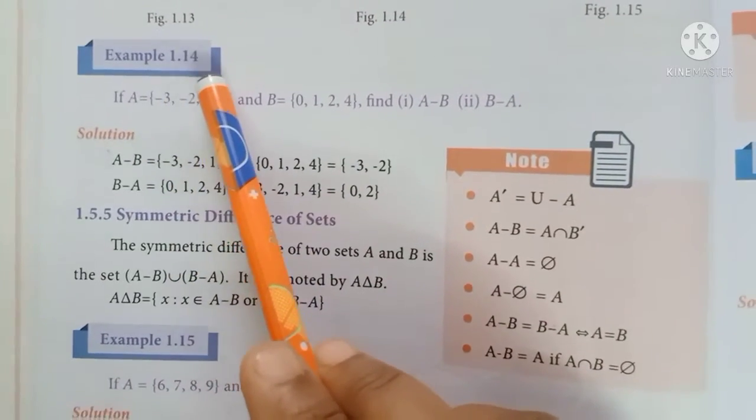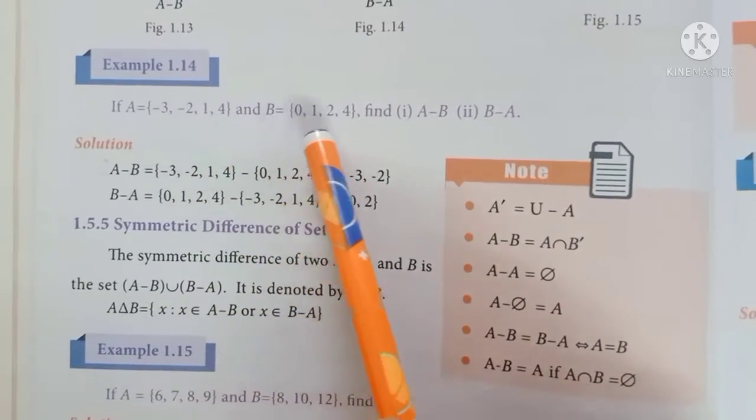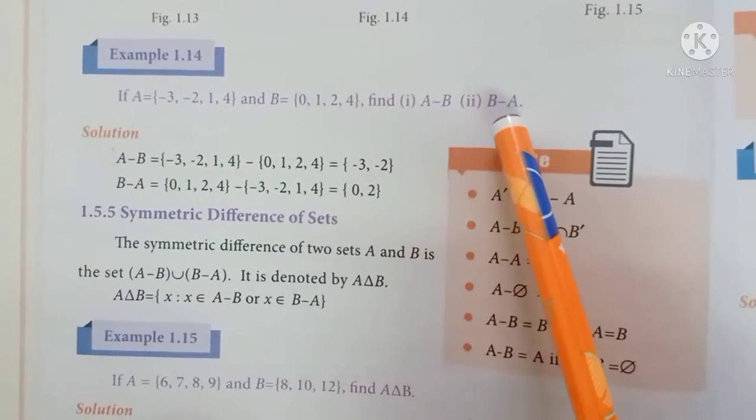Hi friends, in this video we will see example 1.14. If A is equal to {-3, -2, 1, 4} and B is equal to {0, 1, 2, 4}, find A-B and B-A.